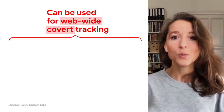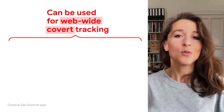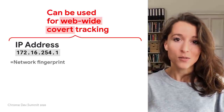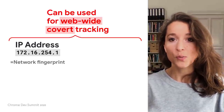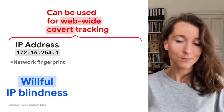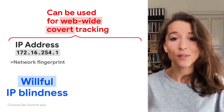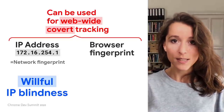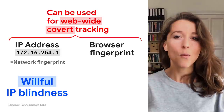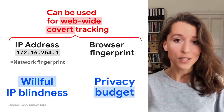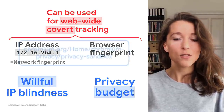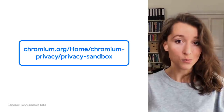So things need to change. To perform web-wide covert tracking, there are a few mechanisms that can be used or rather abused. One of them is IP addresses. There's a proposal to mitigate this problem called willful IP blindness. But it's not enough, because another mechanism that can be used is browser fingerprinting. We'll look at how it works in a bit. But first, let me tell you about one proposal to prevent this: the privacy budget. Both IP blindness and privacy budget are part of the privacy sandbox, a set of proposals to move towards a web that's private by default.